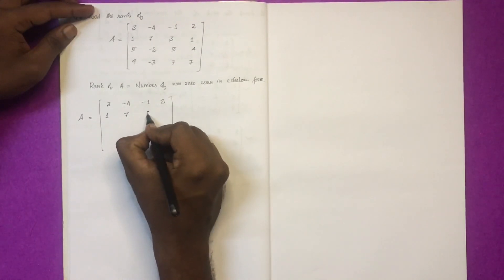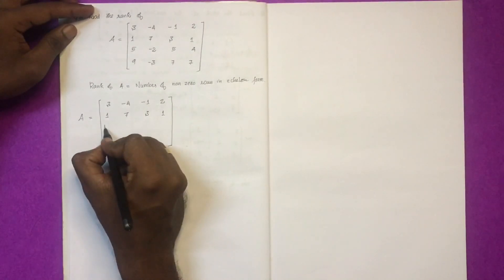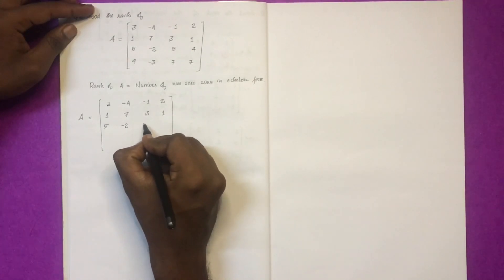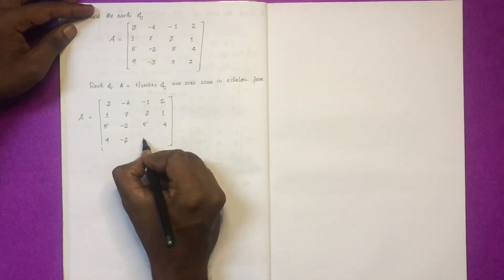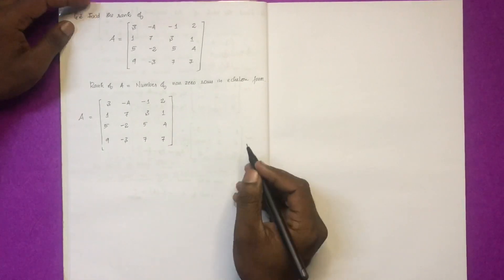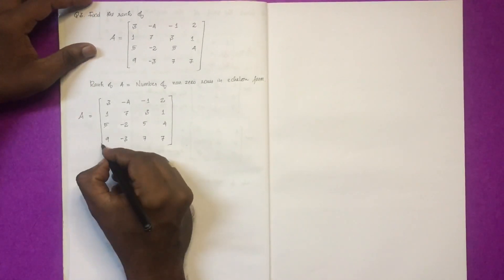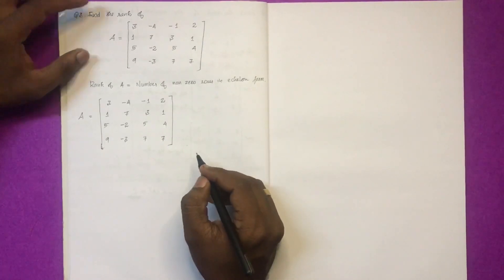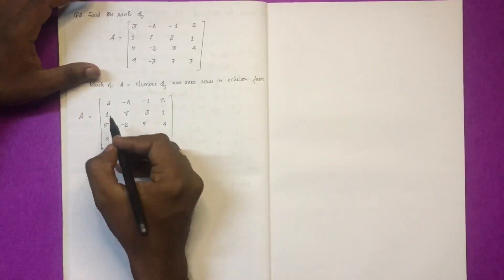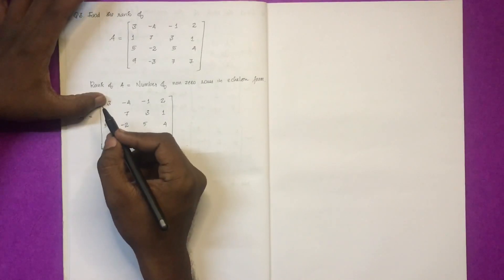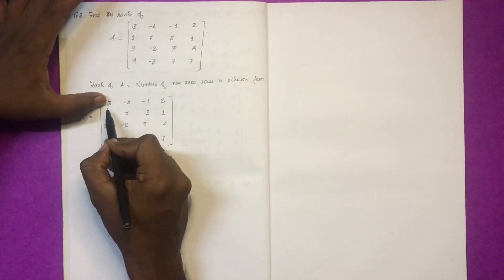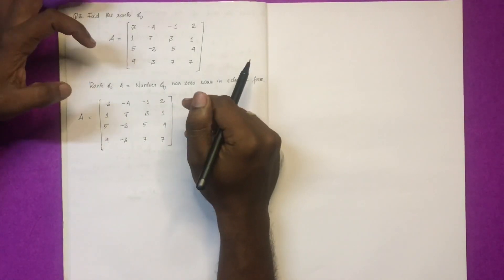The matrix in echelon form: 1, 7, 3; 5, minus 2, 5, 4; 9, minus 3, 7, 7; 8, 8, 9, 9, 10, 11, 12; 13, 14, 15.